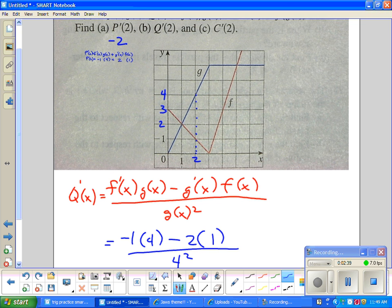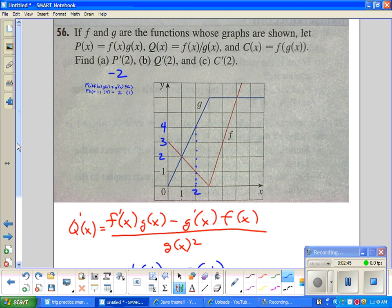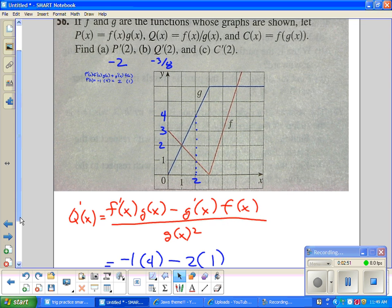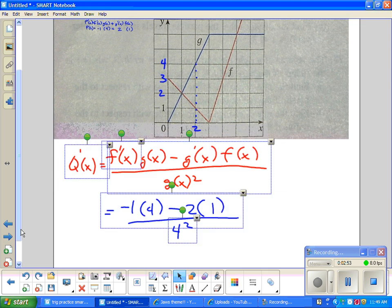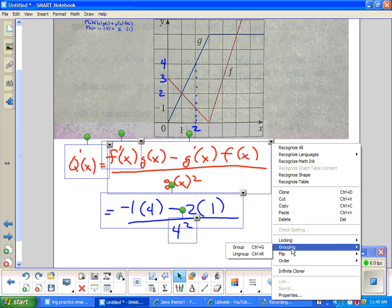So I think the answer to this is minus 4 minus 2 is negative 6 sixteenths. Which reduces to negative 3 eighths. And that's the quotient rule. Alright. So P is for product. Q is for quotient. This must be the chain rule.